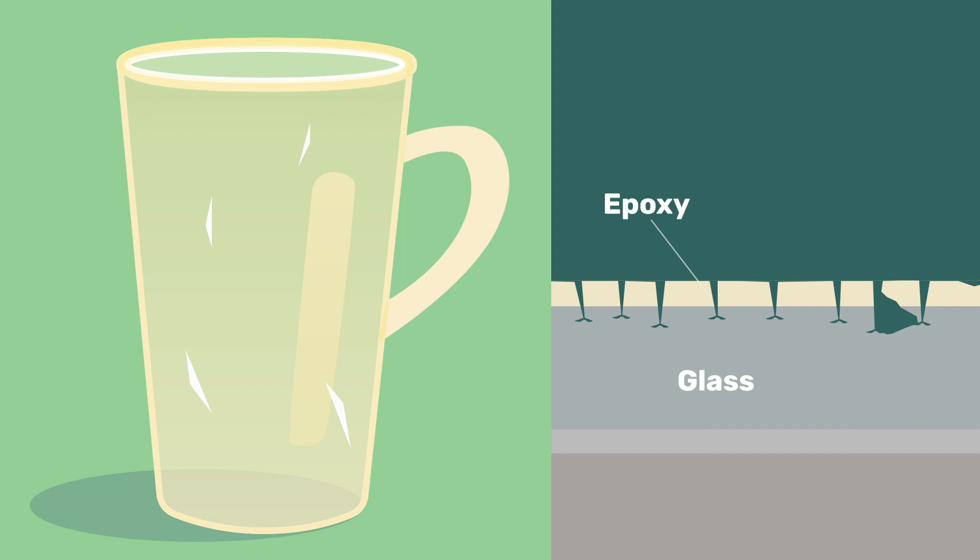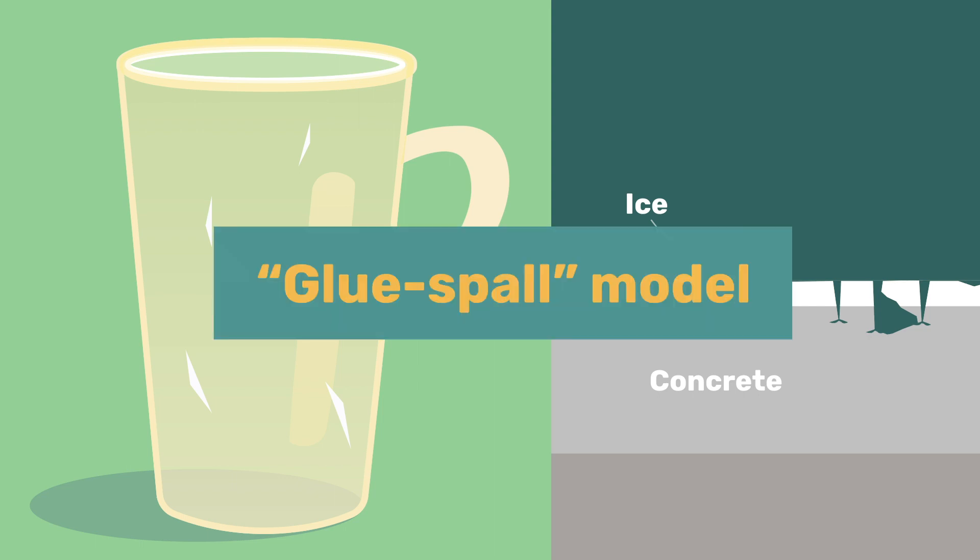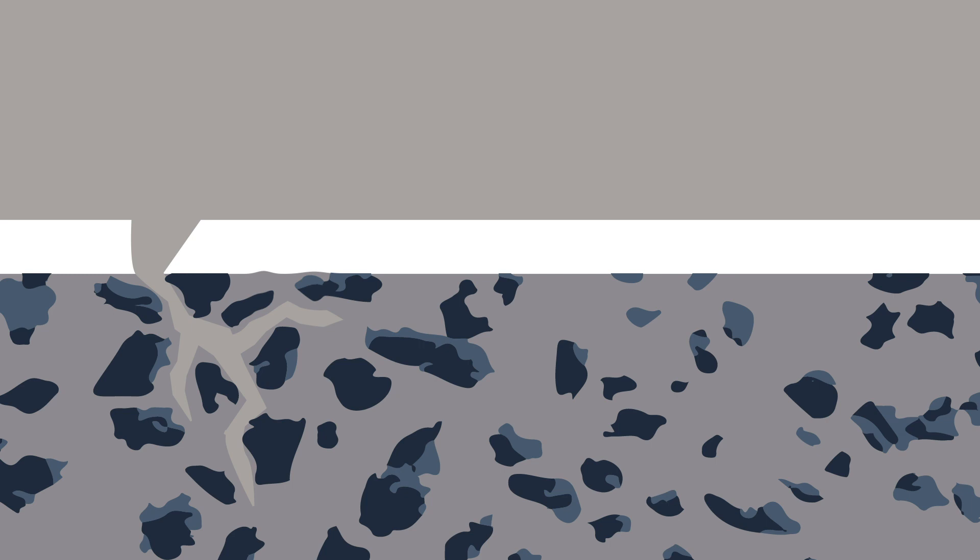This chipping or spalling process is strictly analogous to the cracking of ice on concrete, so we can refer to the salt scaling mechanism as glue spall. In concrete, it should be noted that the cracks are also deflected by the weak interface around the harder aggregates.